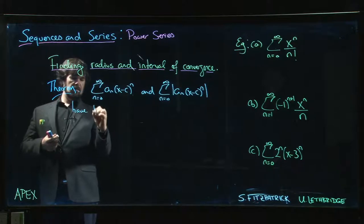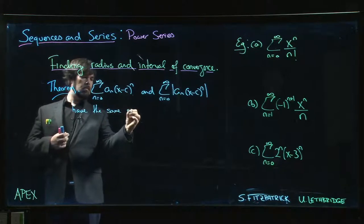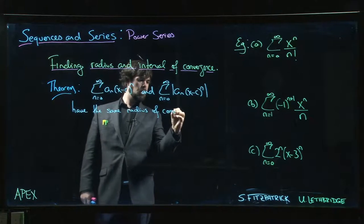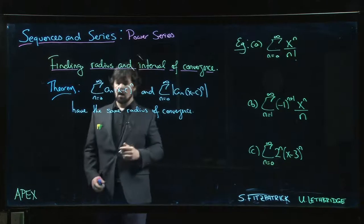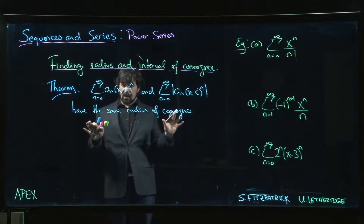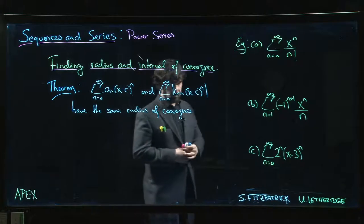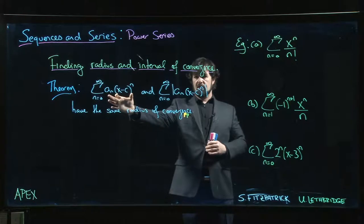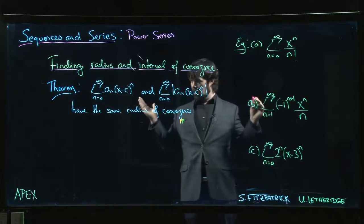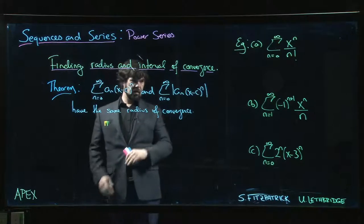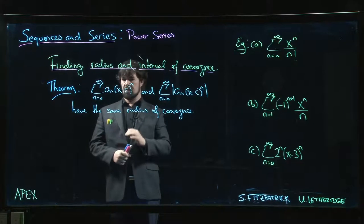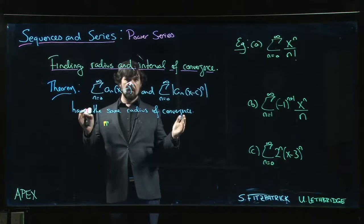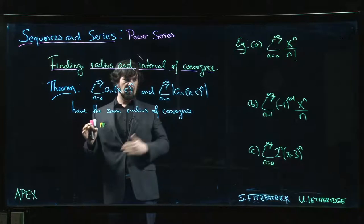The original series and the series of absolute values have the same radius of convergence. We need to be careful that this doesn't imply they have the same interval of convergence. If the series converges absolutely for all values of x you're looking at, then yes, everything should be exactly the same. But it might be that at the ends of your interval of convergence you have conditional convergence at an endpoint — that's one of the things to watch out for.